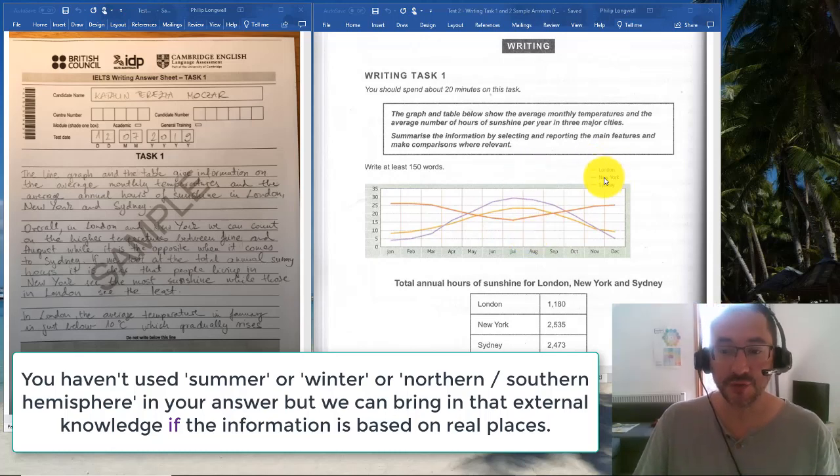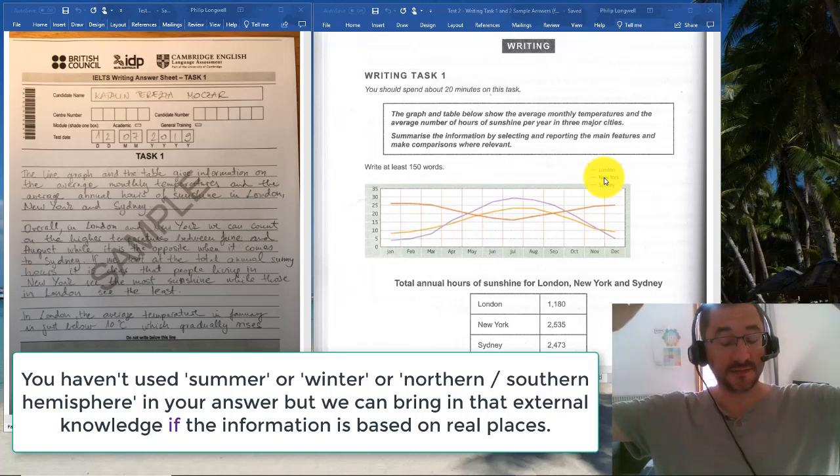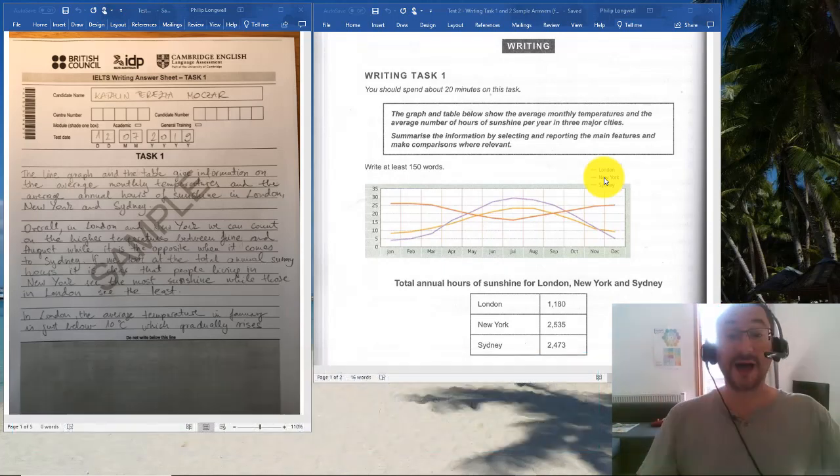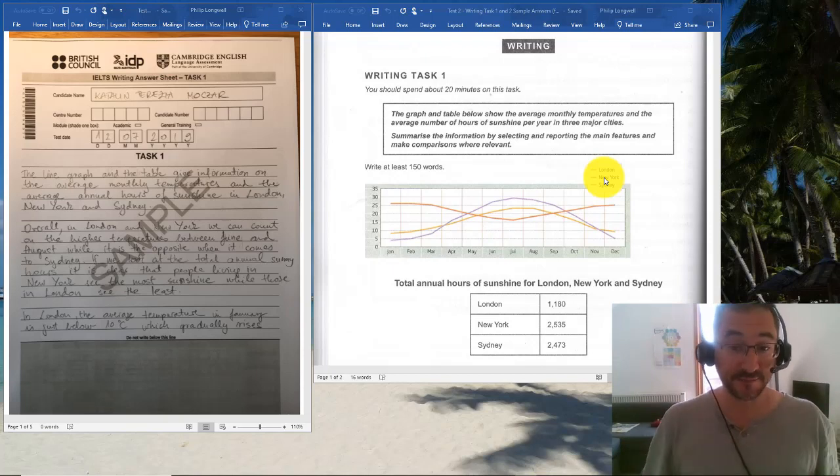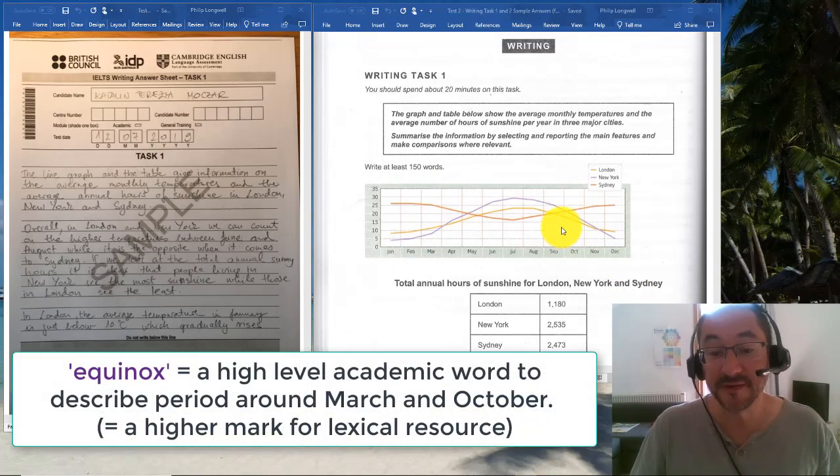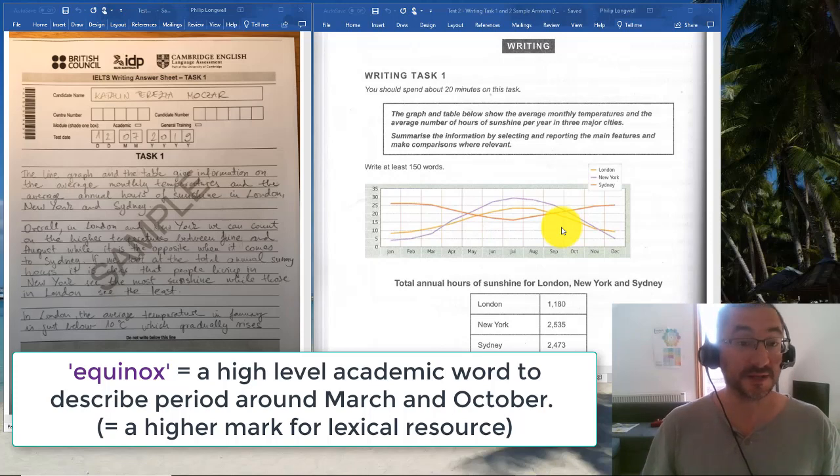However, if you have real cities or real countries, then you can bring a little bit of your knowledge in. You know, or I know and I hope you would know, that London and New York are northern hemisphere cities, so they're above the equator, and Sydney, being in Australia, is a southern hemisphere city, so they're going to have almost opposite temperatures at different times of year.